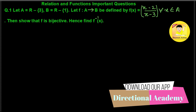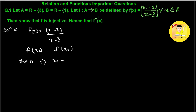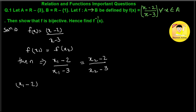So, what is given in this question? f(x) is equal to (x-2)/(x-3). To show f is one-to-one, we assume f(x1) is equal to f(x2). Then, putting this in the given equation: (x1-2)/(x1-3) = (x2-2)/(x2-3). Cross multiplying, we get (x1-2)(x2-3) = (x1-3)(x2-2).